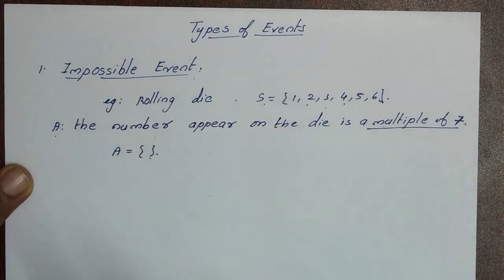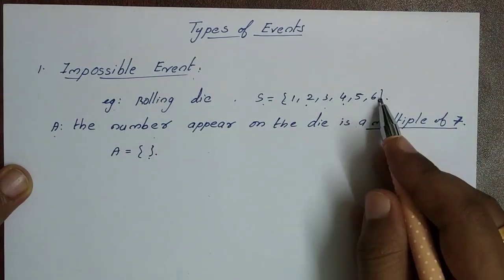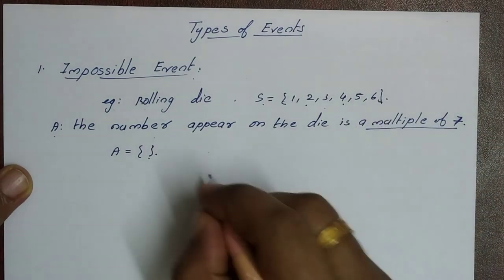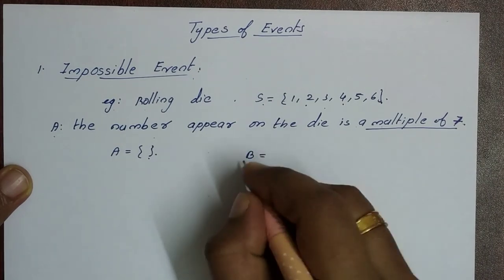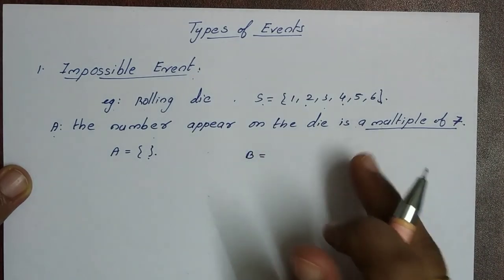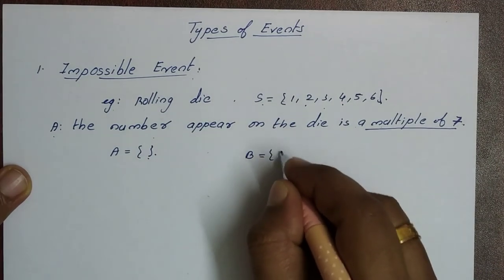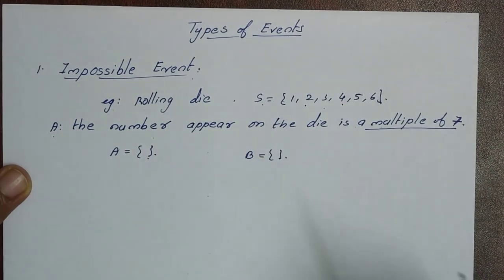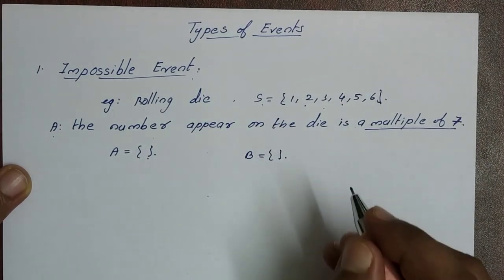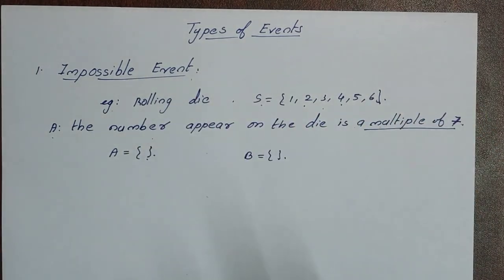The impossible event is a null set. For example, the multiple of 11 on a die — we are going to get a null set, which makes it an impossible event.